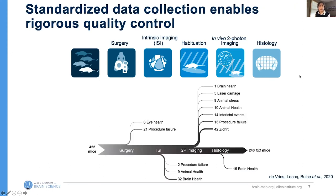This standard pipeline enables us to collect a lot of data, and it also allows us to establish and enforce strict quality control metrics. At each stage we assess various metrics ensuring the animals are healthy and the data is good. This Sankey plot shows the mice that have entered our pipeline and where they fail out for various reasons — many related to animal health, some to data integrity. There are more failures at our imaging stage where microscope issues could cause failures for a single session, which we can repeat. If there are too many failures for a given animal, we remove it from our dataset altogether.